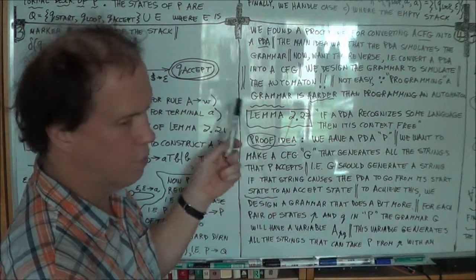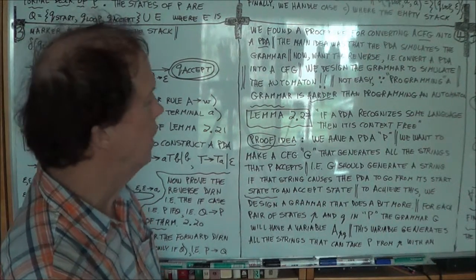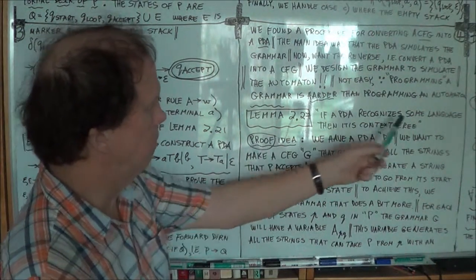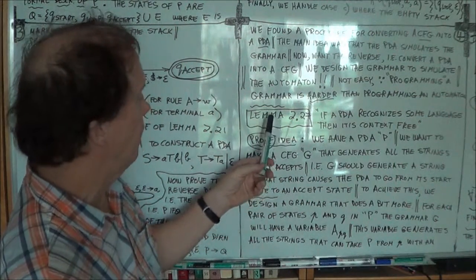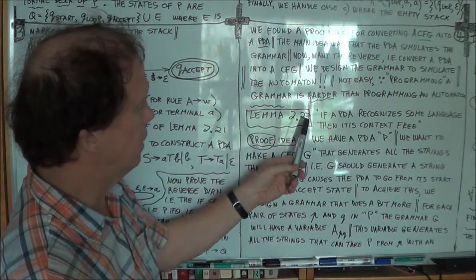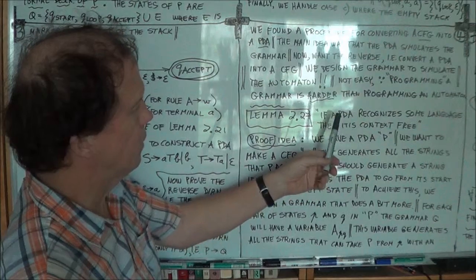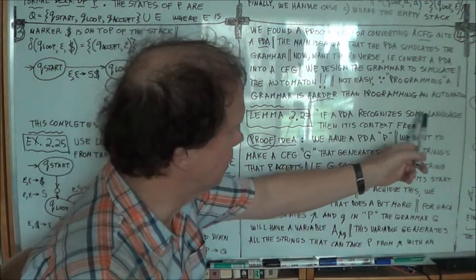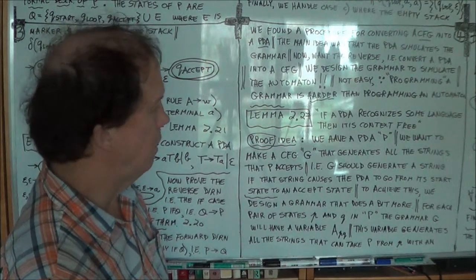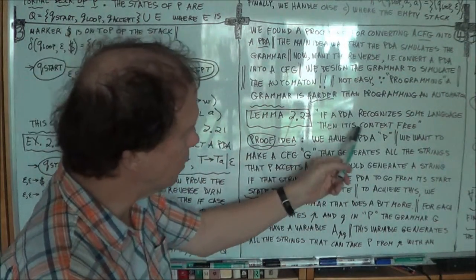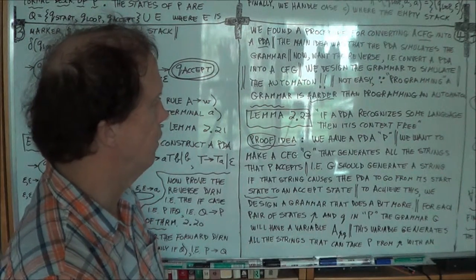Now, these two parts to the if and only if proof, each is, makes a lemma. So now, here's the lemma statement, equivalent to a proof statement, a theorem statement. So lemma 2.27 in the text. Okay? Here it is. So if you have a PDA that's recognizing some language, then that language is context-free. That's what you better prove.